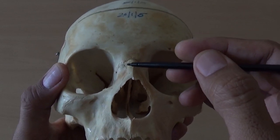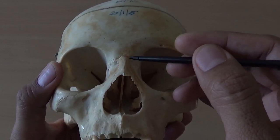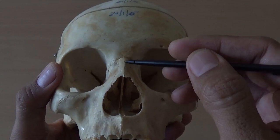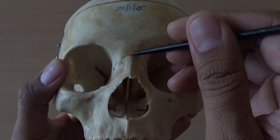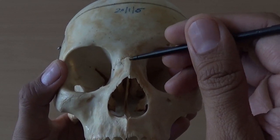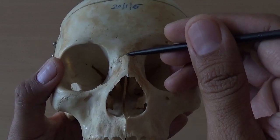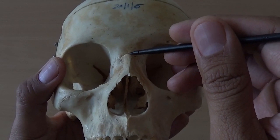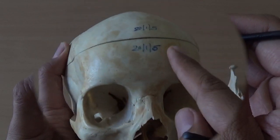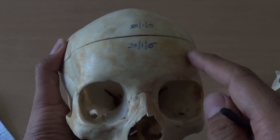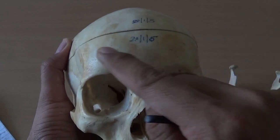Above this, the nasal bones fuse with the frontal bone to form the frontonasal suture, and in the midline is the internasal suture. The meeting point of the internasal suture and frontonasal suture is termed nasion.